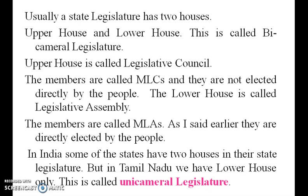The state legislature usually has two houses — the upper house and the lower house. This is called a bicameral legislature. The upper house is called the Legislative Council; the members are called MLCs and they are not elected directly by the people. The lower house is called the Legislative Assembly; the members are called MLAs and they are directly elected by the people. In India, some states have two houses, but in Tamil Nadu we have the lower house only — this is called a unicameral legislature.